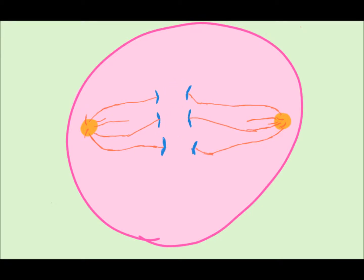In anaphase, chromatids are pulled apart and the liberated chromosomes move towards the poles. The cell elongates as microtubules lengthen. By the end of anaphase, the two ends of the cell have equivalent collections.